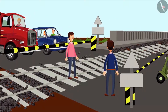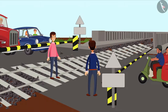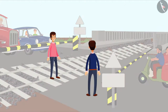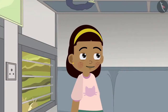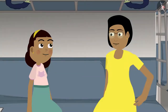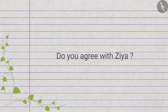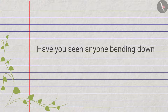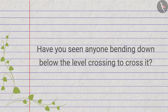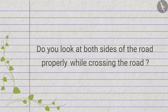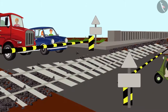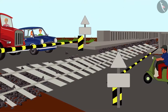Still, some people try to cross the road by bending below the level crossing while the train is coming. Zia says that would be very dangerous, and her mother agrees — we should never do that. The video asks: have you seen anyone bending down below the level crossing to cross it? Do you look at both sides of the road properly while crossing? Look at this picture of the level crossing — so many vehicles are standing and waiting for the train to pass.